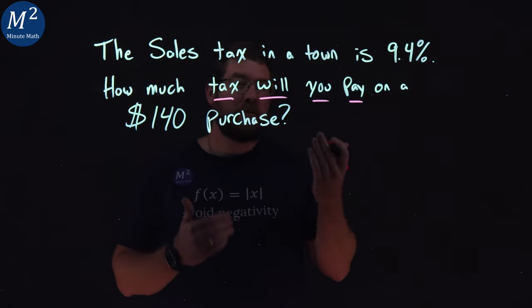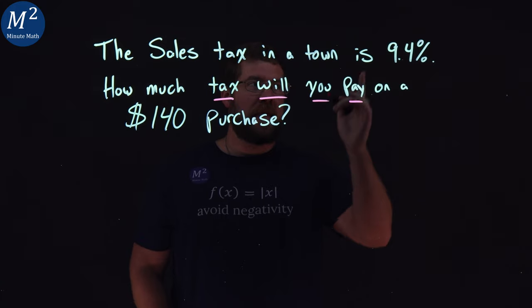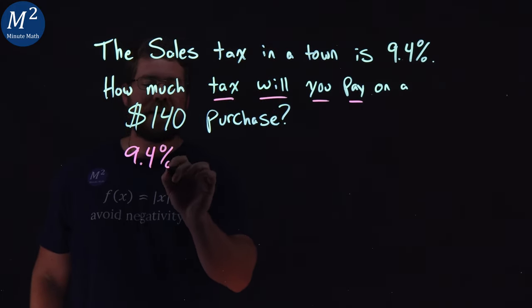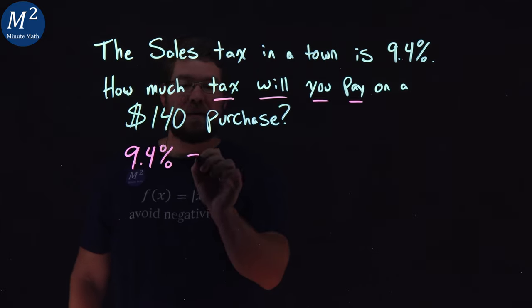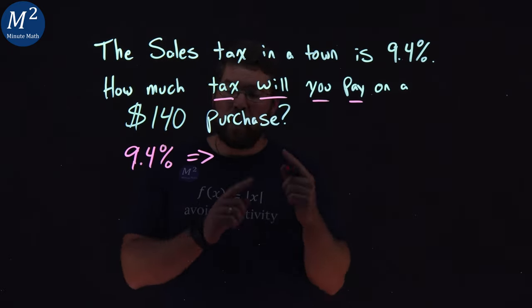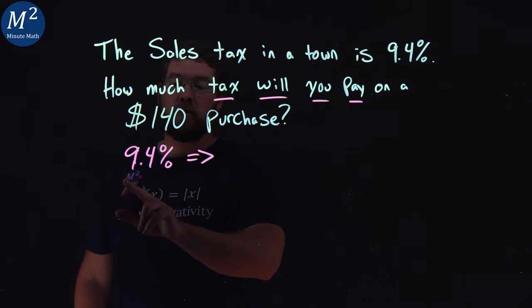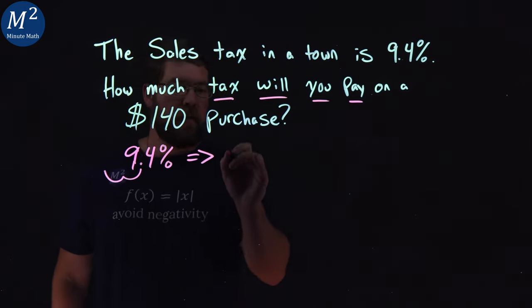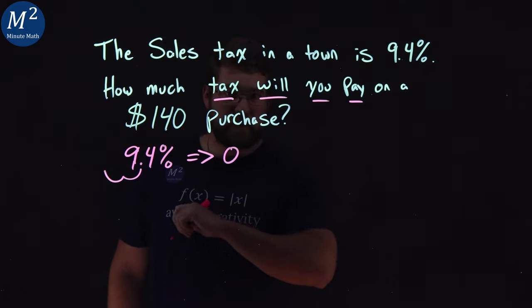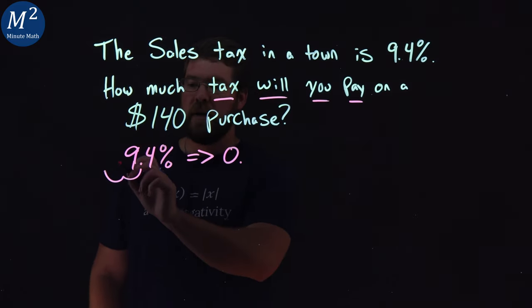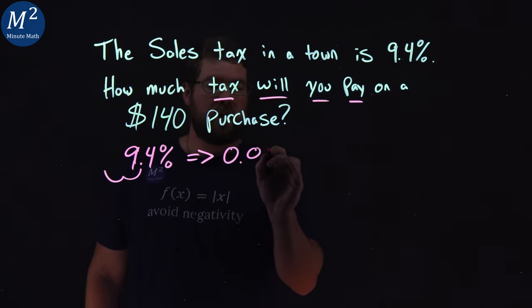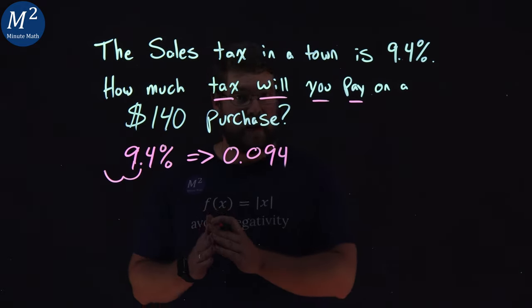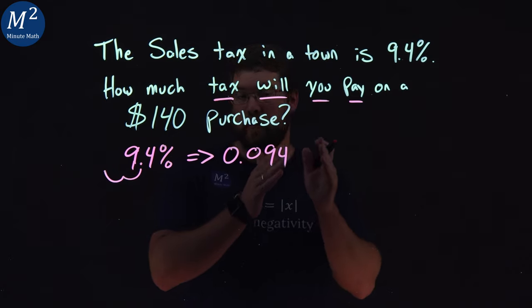So what we're going to do is set up a little equation here. That 9.4%, we need to convert that to a decimal. To do that, we move the decimal place over two spots to the left — one, two. That gives us 0.094. So 9.4% as a decimal is 0.094.